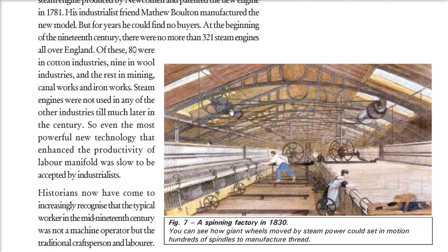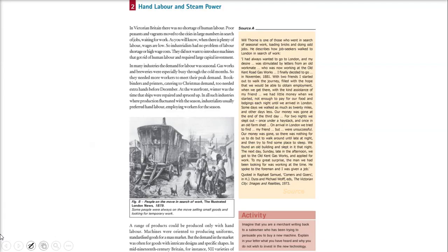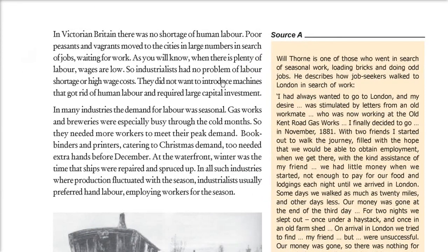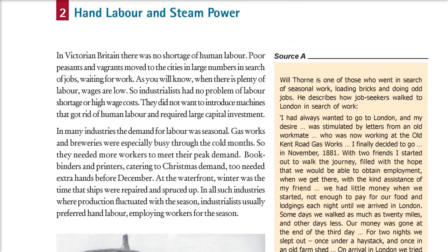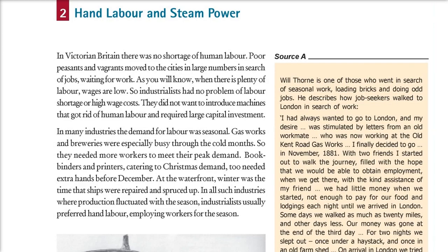This picture shows a spinning factory with giant wheels moved by steam power, creating many threads. Steam engine was an important development, but people were not very keen on it at that time. What we conclude is that most people were traditional craftsmen and laborers, and machine operators were also there, but the pace of change was very gradual.